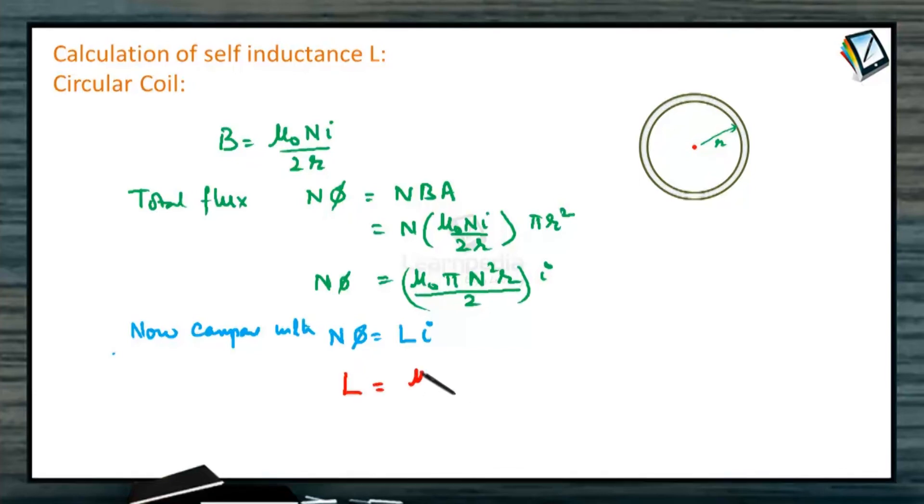So what are the steps we have taken to find L? Assume current I is flowing. Find the magnetic field due to the current in the coil. Then find the total flux. Compare that flux with Li. Nφ equals Li and get the value of L.